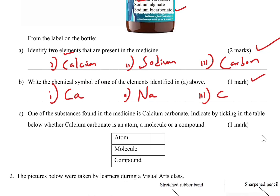Part C: one of the substances in the medicine is calcium carbonate. Indicate by ticking in the table whether calcium carbonate is an atom, a molecule, or a compound. We can see here we have two elements chemically combined, and therefore this is a compound. It is not an atom and not a molecule — it is a compound. You score one mark.